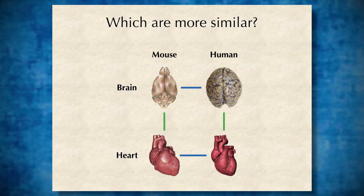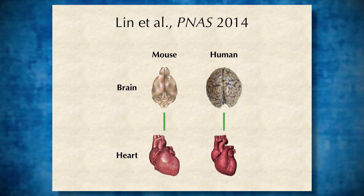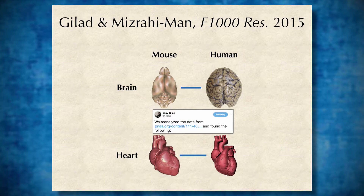So a mouse brain and a mouse heart versus a human brain and a human heart. The original paper, Lin et al., found that the same organism but different tissues actually look more similar, which is very counterintuitive. The skeptics, Gilad and Mizrahiman, actually reanalyzed the same dataset from the original paper and found the entirely opposite result — that the same tissue but across different organisms seems to look more similar.